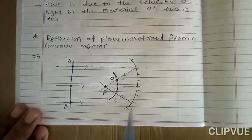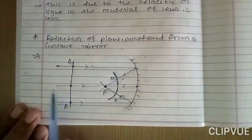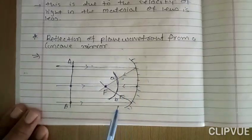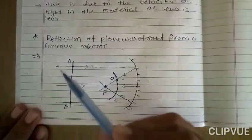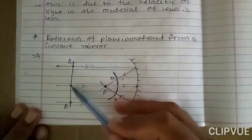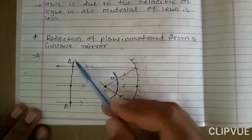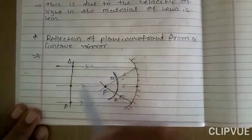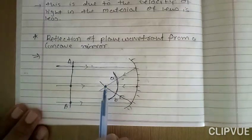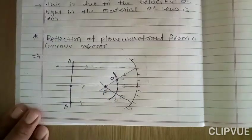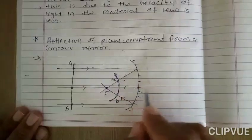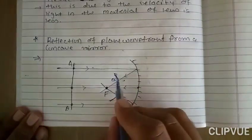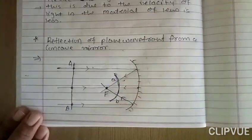To repeat: this is the concave mirror. The rays are from infinite distance. After reflection, the rays are at the focus F. By connecting the particles, this is the incident wavefront AB. Here we draw an arc taking the center F. This arc represents the reflected wavefront. So the reflected wavefront point is AB.